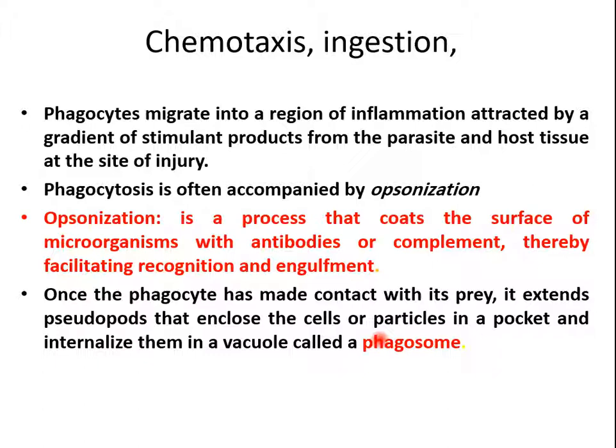Chemotaxis: if there is no signal from the site of infection, there is no phagocytosis. Phagocyte cells migrate into the region of inflammation, attracted by stimulants from the parasite or host tissue at the site of injury. Phagocytosis can be enhanced by opsonization — the process that coats the surface of microorganisms with antibodies or complement, thereby facilitating recognition and engulfment. When the phagocyte makes contact with its prey, it extends pseudopods that enclose the cell or particle in a pocket and internalizes it in a vacuole called a phagosome.